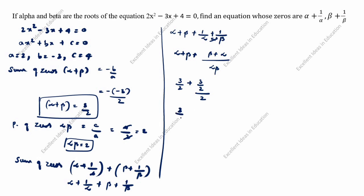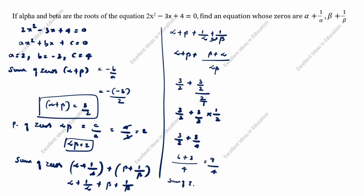Continuing the calculation: 3/2 + 3/2 × 1/2 = 3/2 + 3/4. Taking the common denominator of 4: (6 + 3)/4 = 9/4. So the sum of the new zeros is 9/4.